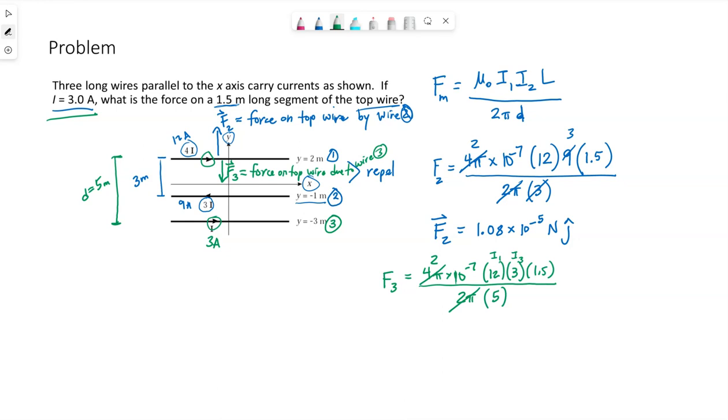So plugging in the numbers, I'm getting 2.16 times 10 to the negative 6th. This will be in newtons, but this force is downwards, so that would be the negative j-hat direction.